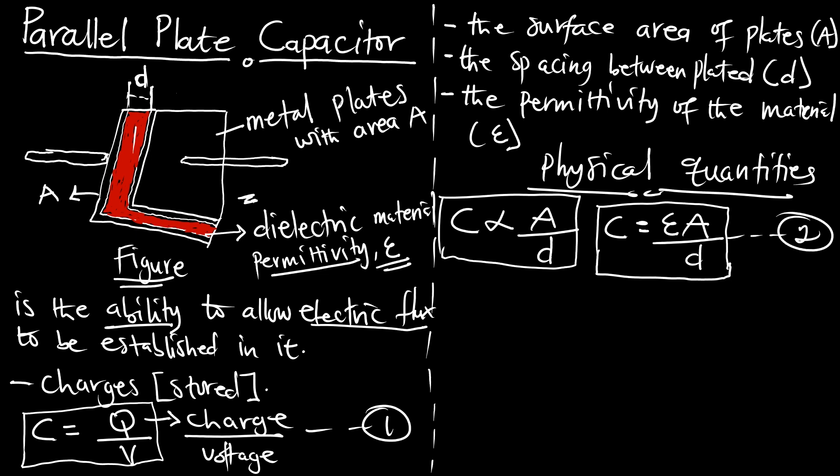This means C must equal a constant — which is the permittivity of the dielectric, epsilon — multiplied by area A, divided by distance D. This is the capacitance equation (equation 2). A is the area of the plates, D is the distance, and epsilon is the permittivity of the dielectric material, which is the insulator between plate 1 and plate 2.